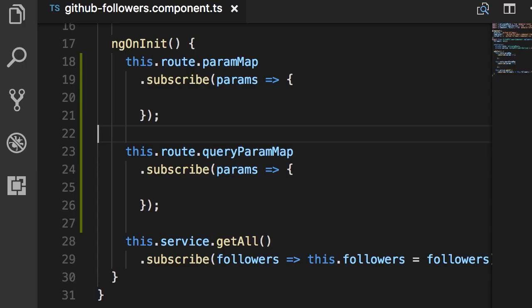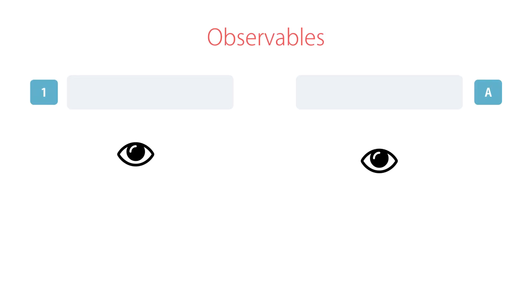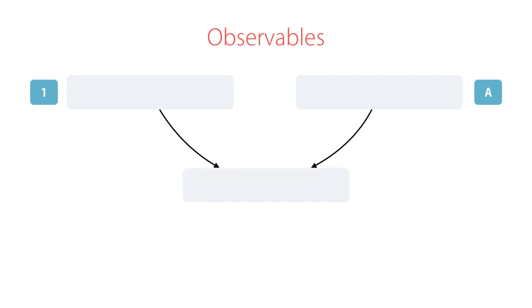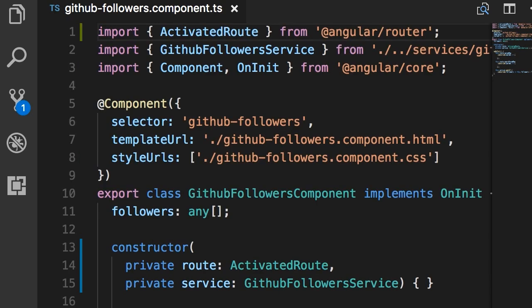Let me show you how you can subscribe to two different observables at the same time. This is actually easier than what you might think. An observable is a stream of asynchronous data that arrives over time. Instead of having two separate subscriptions to two observables, we want to combine them into a new observable and then subscribe to that one.